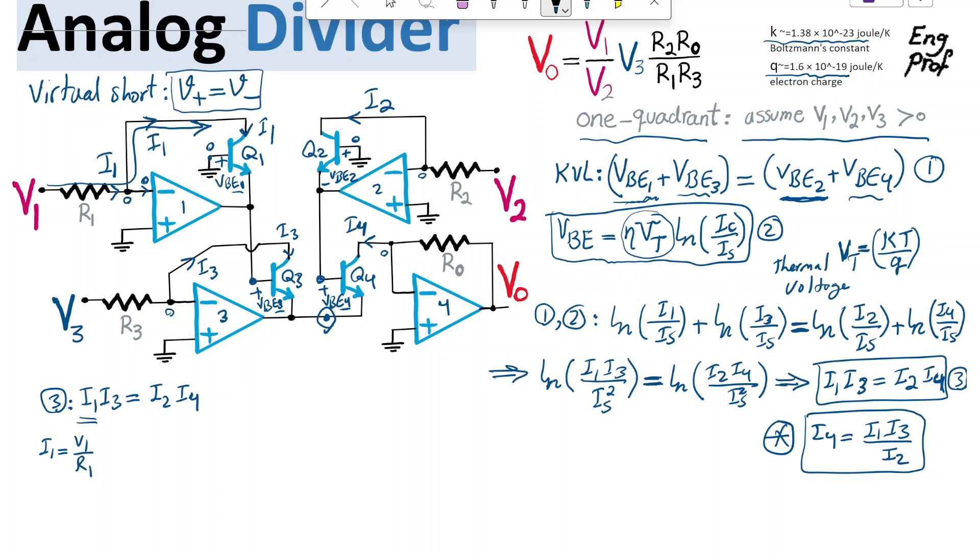And I can say I3, for the same reason, is V3 over R3. For the same reason, I can say I2, for here on top right, is equal to V2 over R2.